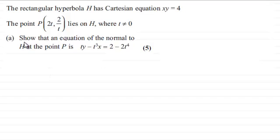And we've got to show that an equation of the normal to H at the point P is given by ty minus t cubed x equals 2 minus 2t to the power 4. And this is for 5 marks.